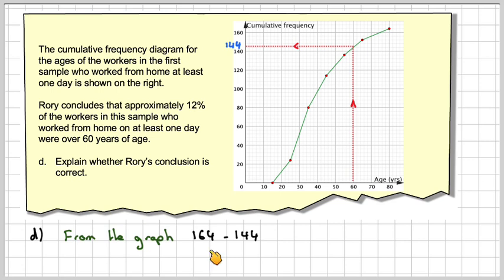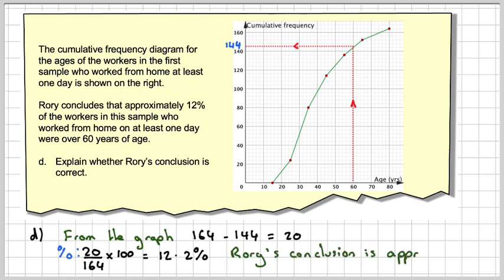So 164 minus 144 is 20. So there's 20 at the top here. The percentage will be 20 over 164 times 100, which gives me 12.2%. That's roughly the same as 12%. So our conclusion will be that Rory's conclusion is approximately correct.